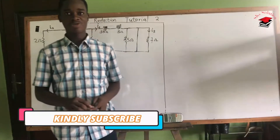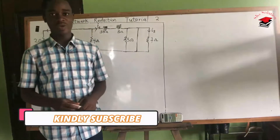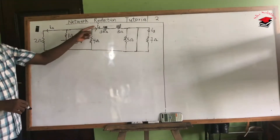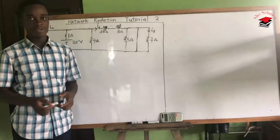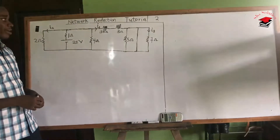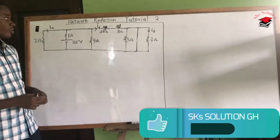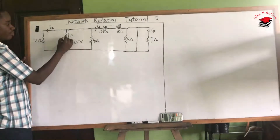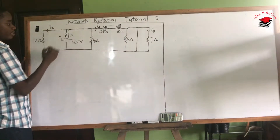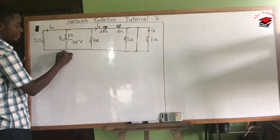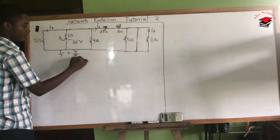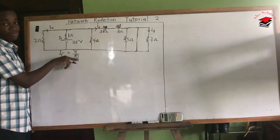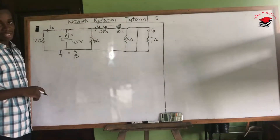Hello guys, welcome back to our tutorial on network reduction. In this tutorial we are going to calculate for current I1, I2, and I3. As usual, to get current in any of the resistors we first have to calculate the total current IT. From Ohm's law, IT is equal to the total voltage over total resistance. We are given the total voltage, so we need to calculate the total resistance.